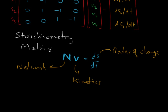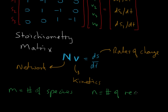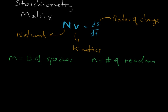If we state that M is the number of species and N is the number of reactions, then the stoichiometry matrix N is an M by N matrix. The vector V is of size N.